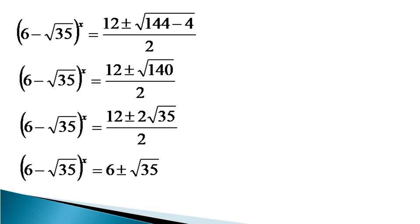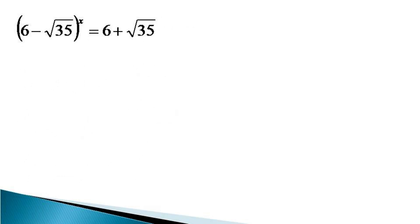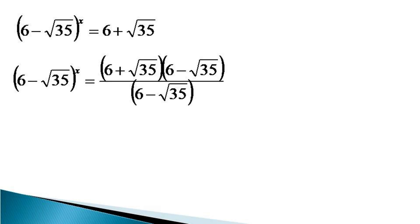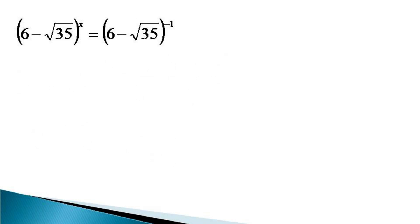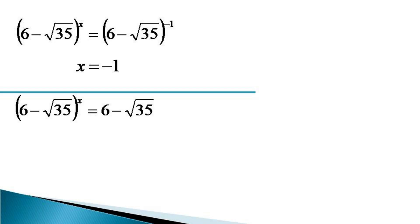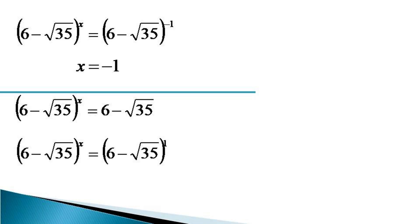Considering the value with the positive sign, (6 minus √35)^x = 6 + √35. To rationalize this, we multiply numerator and denominator by (6 minus √35), which gives (6 minus √35)^x = 1 / (6 minus √35) = (6 minus √35)^(−1). Since the bases are equal, the indices must be equal, making x = −1. For the second value with the minus sign, (6 minus √35)^x = (6 minus √35)^1, so x = 1.